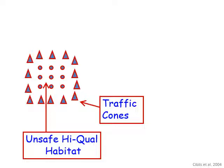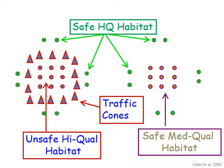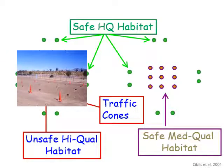Inside the traffic cones were food buckets — the food there was grain, which was high quality. There was also an area outside the traffic cones which was safe and had high quality food. And finally there was an area with medium quality food — grass hay — that was safe with no traffic cones. So animals in the pen could choose high quality food in the safe area outside the cones, high quality food in the unsafe area inside the cones, or medium quality food in the safe area.